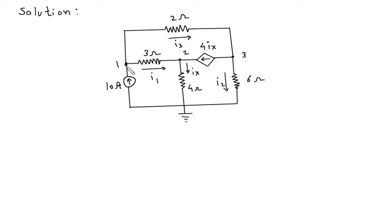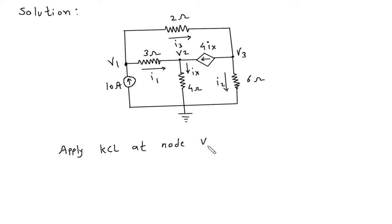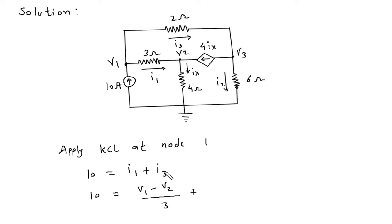Now we will apply KCL at node 1. Let's say voltage at node 1 is V1, voltage at node 2 is V2, and voltage at node 3 is V3. Applying KCL at node 1: the entering current is 10 amperes, and the leaving currents are I1 plus I3. So, 10 equals I1, which is (V1 minus V2) divided by 3, plus I3, which is (V1 minus V3) divided by 2.